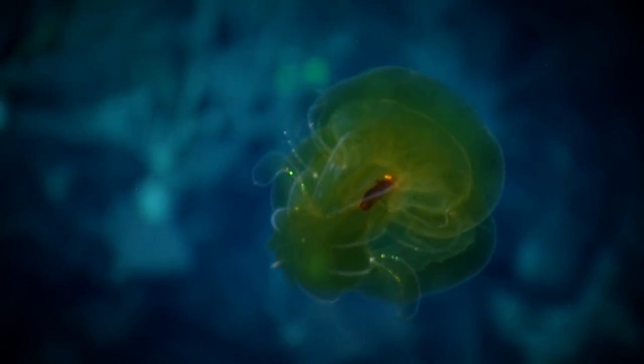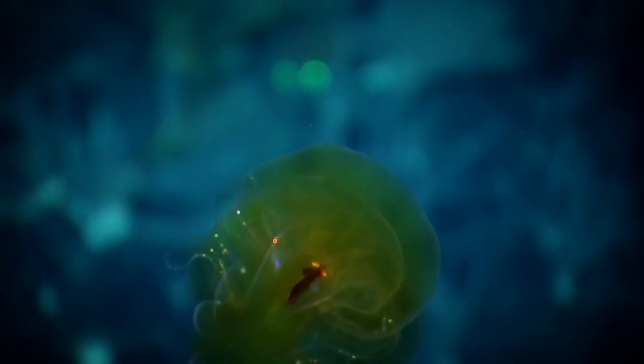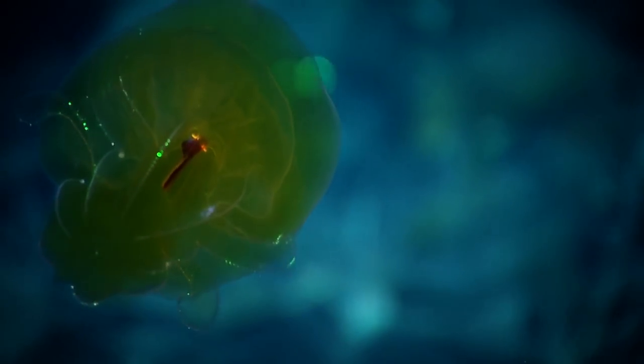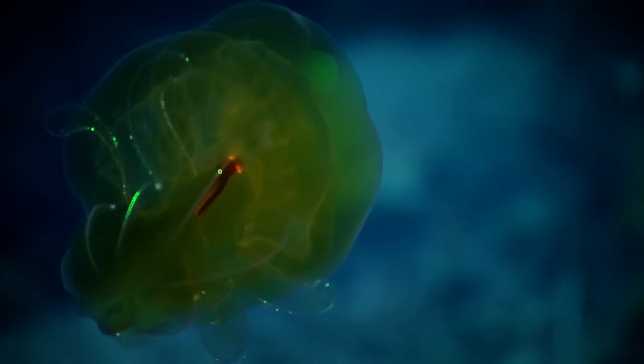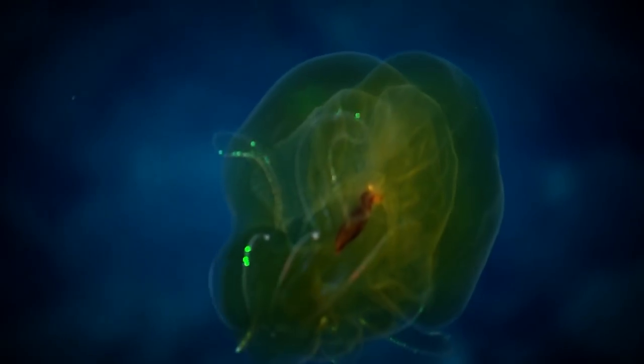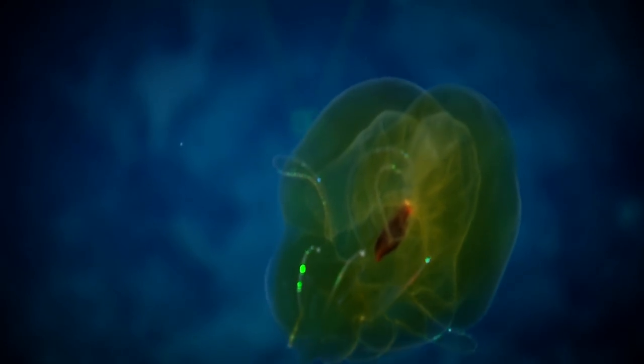What is it called again? It's a ctenophore, a lobate ctenophore. So you see, it's radially symmetric, but it actually has these lobes on the outside. And you see these auricles, these kind of arm-like extensions on the inside. And then you see the gut in the middle. That's beautiful.